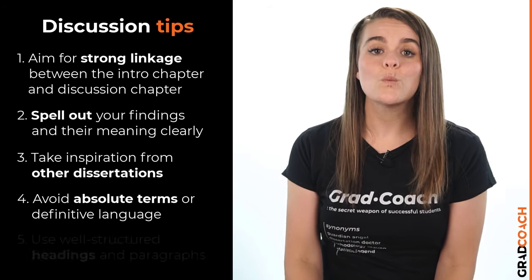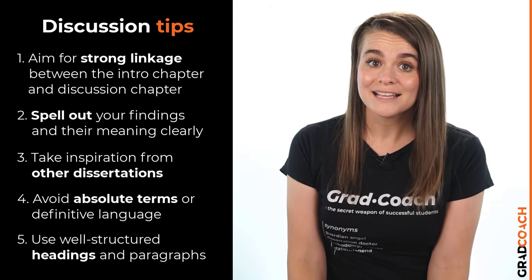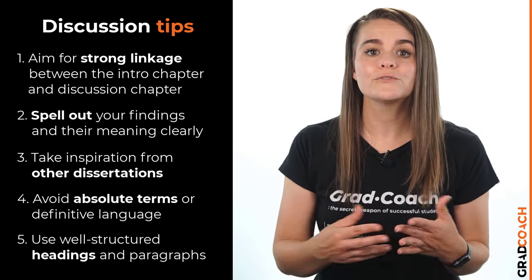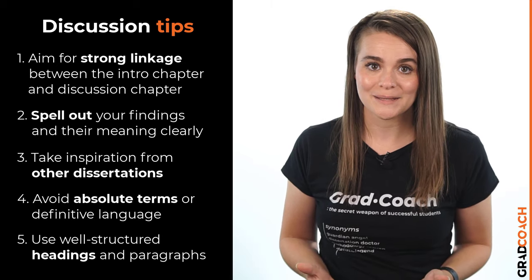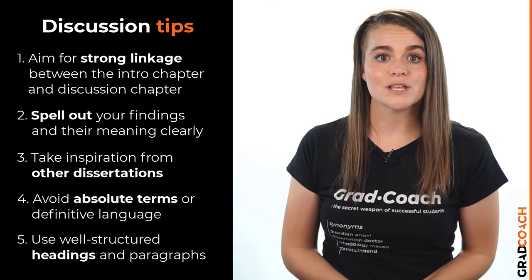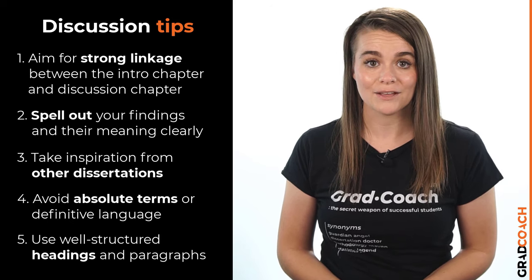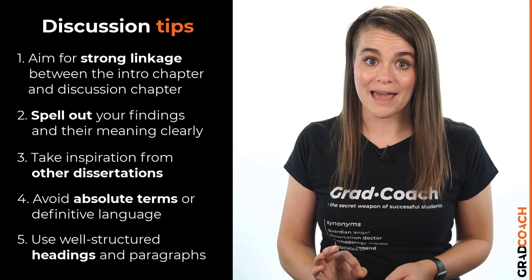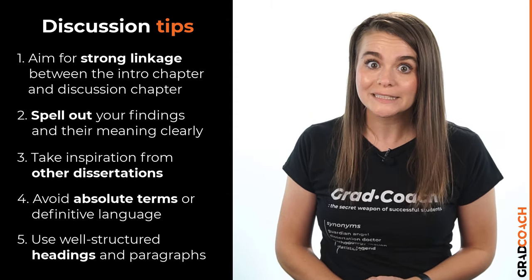Number five: use well-structured and consistently formatted headings to ensure that your reader can easily navigate between sections and so that your chapter flows logically and coherently. It is generally a good idea to make use of Microsoft Word's predefined styles for your headings and subheadings, which will also allow you to use Word's automatic table of contents generator — which is really handy. If you incorporate these five tips into your writing process and follow the structure discussed in this video, your discussion chapter will be headed in a good direction.